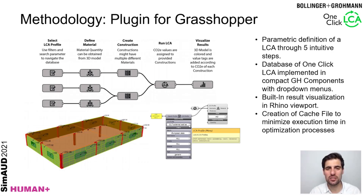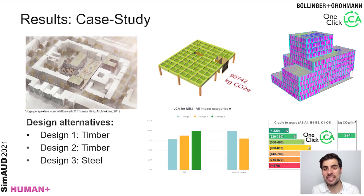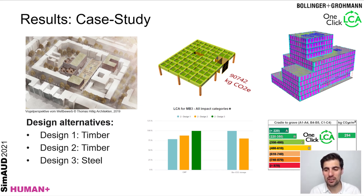You just need basic Grasshopper skills to use this plugin. First, let's explain in which cases it is worthwhile to use the Grasshopper plugin instead of the more basic Rhino plugin. Grasshopper is useful in two cases: first, when you want to define the geometry of your building in a parametric way and get LCA results at every single iteration; and second, to post-process or automate the geometry model you have in Rhino.